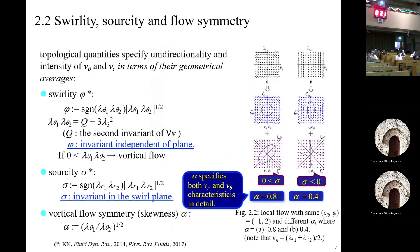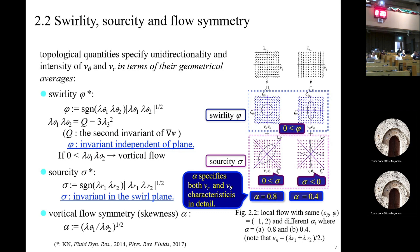Sorority is a topological quantity defined by the geometric average of the eigenvalue of the azimuthal component. If sorority is positive, it indicates the azimuthal flow has a uniform direction — that is, swirling or vortical flow. Similarly, source-ity is defined by the geometric average of the eigenvalue of the radial component. Vertical flow symmetry is defined by the ratio of the two eigenvalues of the azimuthal component. Even though sorority is the same, if vertical flow symmetry changes, the azimuthal flow feature and the feature of the radial component change accordingly.